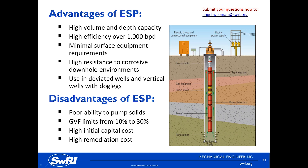The disadvantages of an ESP are that producing solids or operating near the GVF limits can significantly reduce pump life. Erosion can also occur fairly easily because of the tight tolerances of the pump components. Also, if gas lock occurs, the pump will continue to rotate with no fluid movement, resulting in a failure of the ESP motor because the process fluid flows over the motor and that is what actually cools it down — so if there is no fluid movement, there is no cooling and the motor will eventually overheat and fail.